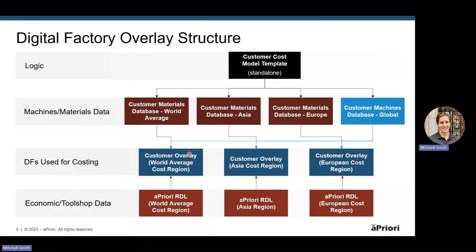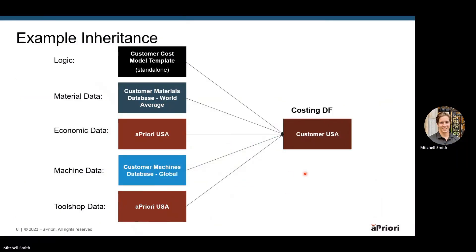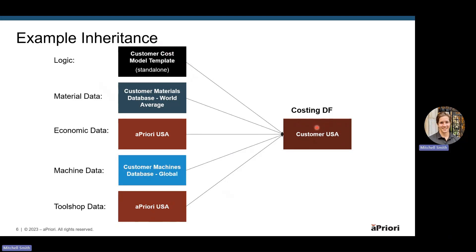Breaking this down a little more into one direct example: here we have those three template digital factories as well as our Apriori RDLs that are all being passed into our costing digital factory or our overlay. In this case, we have our customer USA digital factory or overlay, and it's inheriting the logic information, material data, and machine data from those three template digital factories, as well as the economic and tool shop data from the Apriori RDLs. You might be thinking this is a lot — five digital factories being passed in as information for one — but this is really powerful when we start to have multiple overlays.